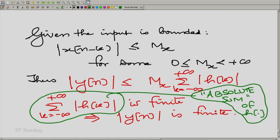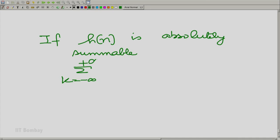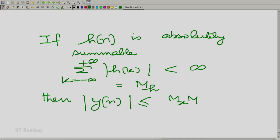In fact, let us get back here. If h(n) is absolutely summable, that is summation k going from minus to plus infinity mod h(k) is strictly less than infinity and equal to M_h, then mod y(n) must be less than or equal to M_x times M_h for all n and hence bounded. So this is a sufficient condition.